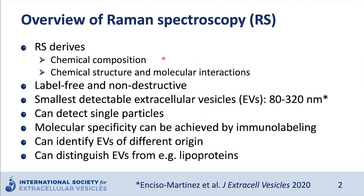This measurement is label-free and non-destructive. Samples' integrity is preserved during the measurement, so they can in principle be used afterwards. The smallest detectable EV diameter depends on various parameters, but for single particle measurement, typically ranges between 80 and 300 nanometers, although it could be lower if smaller EVs are known to be placed alone within the optical focus of a Raman scope. Single molecule sensitivity is possible, but you couldn't distinguish whether one or more EVs were present during a measurement without the use of another technique to confirm that.